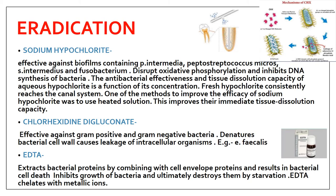Biofilms are the main reason for endodontic failure - they are very resistant and difficult to remove properly. The various ways to eradicate biofilm include: first, sodium hypochlorite irrigation. Sodium hypochlorite is effective against biofilms containing Prevotella intermedia, Peptostreptococcus micros, Staphylococcus intermedius, and Fusobacterium. It works by inhibiting the DNA synthesis of bacteria, leading to bacterial death.